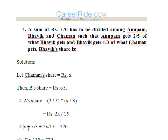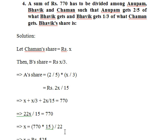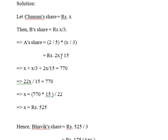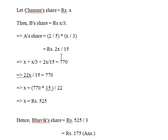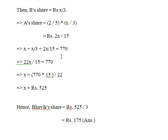The total is: x + x/3 + 2x/15 = 770. Solving gives x = 525. Bhavik's share is x/3 = 525/3 = 175.